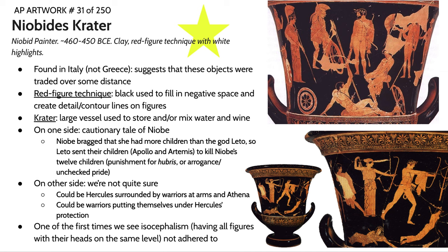This vase has two sides. One is an ambiguous narrative — we're pretty sure the figure is Hercules because he has a lion cloak, a club, and he's muscular — and we're seeing other warriors surrounding him, so it could be a call to arms. On the other side, the narrative is clearer: it depicts the cautionary tale of Niobe. Niobe was a mortal woman who bragged that she had more children than the god Leto. Leto was like, 'yeah, but my kids are better,' and sent her children Apollo and Artemis to kill all of Niobe's 12 children. This is a depiction of a narrative punishing hubris — unchecked arrogance or pride — which is a pretty common motif in ancient Greek narratives.